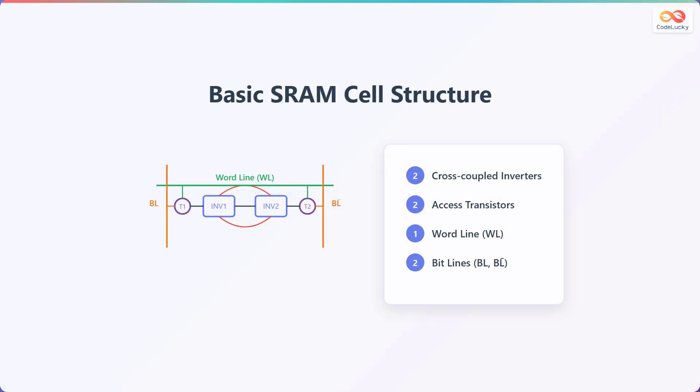Here's a look at the basic structure of an SRAM cell. Each cell consists of several key components. You'll find two cross-coupled inverters that form the core of the storage element. There are also two access transistors that control the connection to the bit lines. Additionally, there is one word line, often shortened to WL, and two bit lines, BL and BL bar.